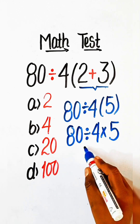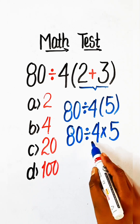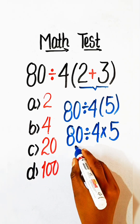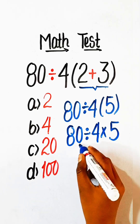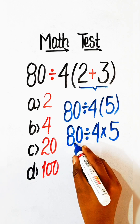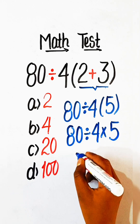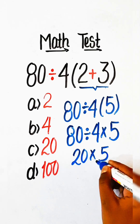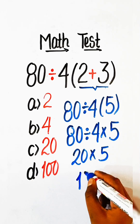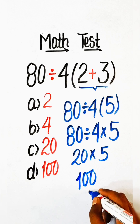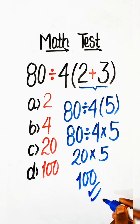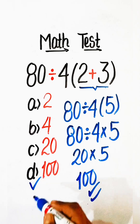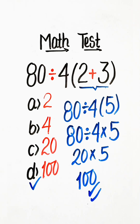We have here division and multiplication, so we will do the operation from left to right. 80 divided by 4 is 20, multiply by 5 is 100. So Option D, 100, will be our correct answer.